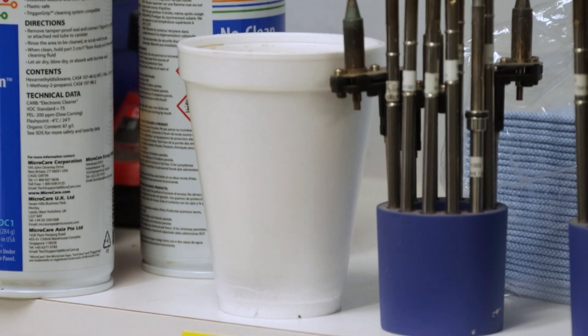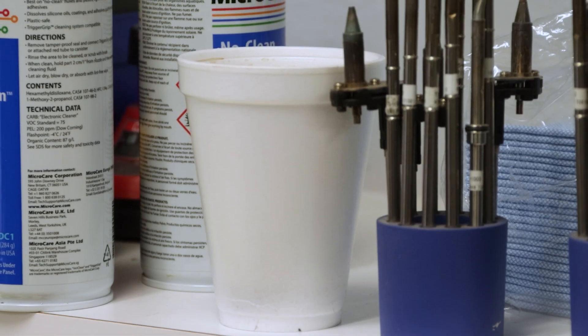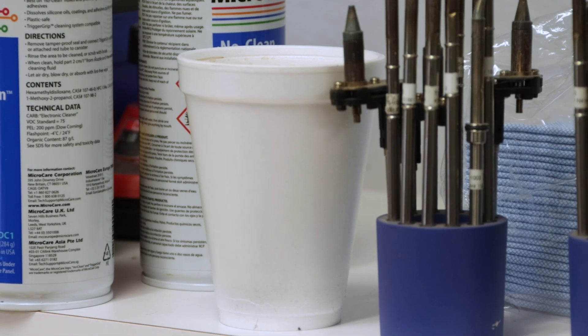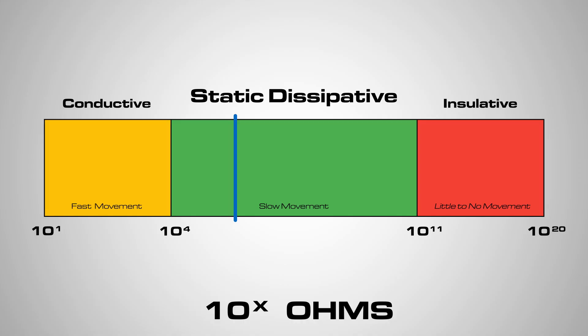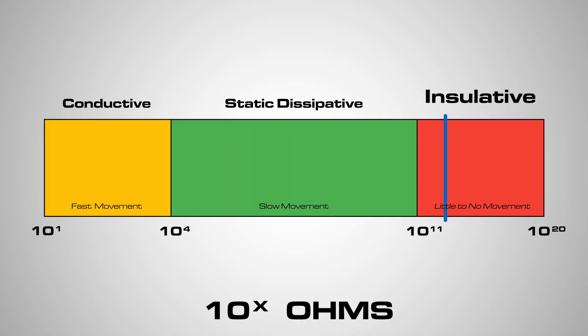Insulative materials do not allow for the movement of electrons. These are to be avoided in your ESD protected area since they do not provide a pathway for the removal of electrostatic charges. In most cases they are also sources of electrostatic charge, giving even more reasons to keep them out of your EPA. Any material measuring above 10 to the 11 ohms would be considered an insulator.